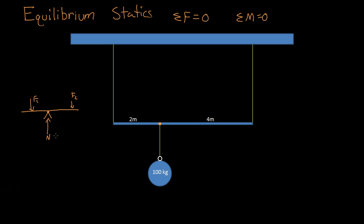But if N is equal to force one plus force two, that doesn't mean we have equilibrium. Because if force two is the same as force one but it's all the way out here, the seesaw will rotate that way. And if it's rotating, then it's no longer static or stationary. That's why the summation of the moments must also be zero — force one must have a moment that counters force two.